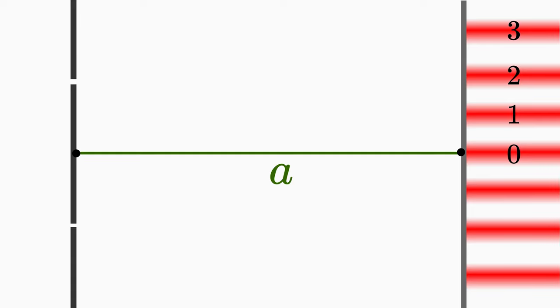But not only that, you can also measure the distance x from the main maximum to a bright fringe, for example, with a ruler.